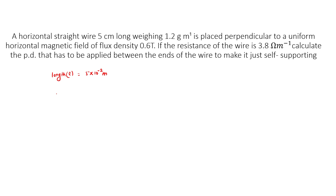Weight: mass M equals 1.2 divided by 1000 kg per meter.